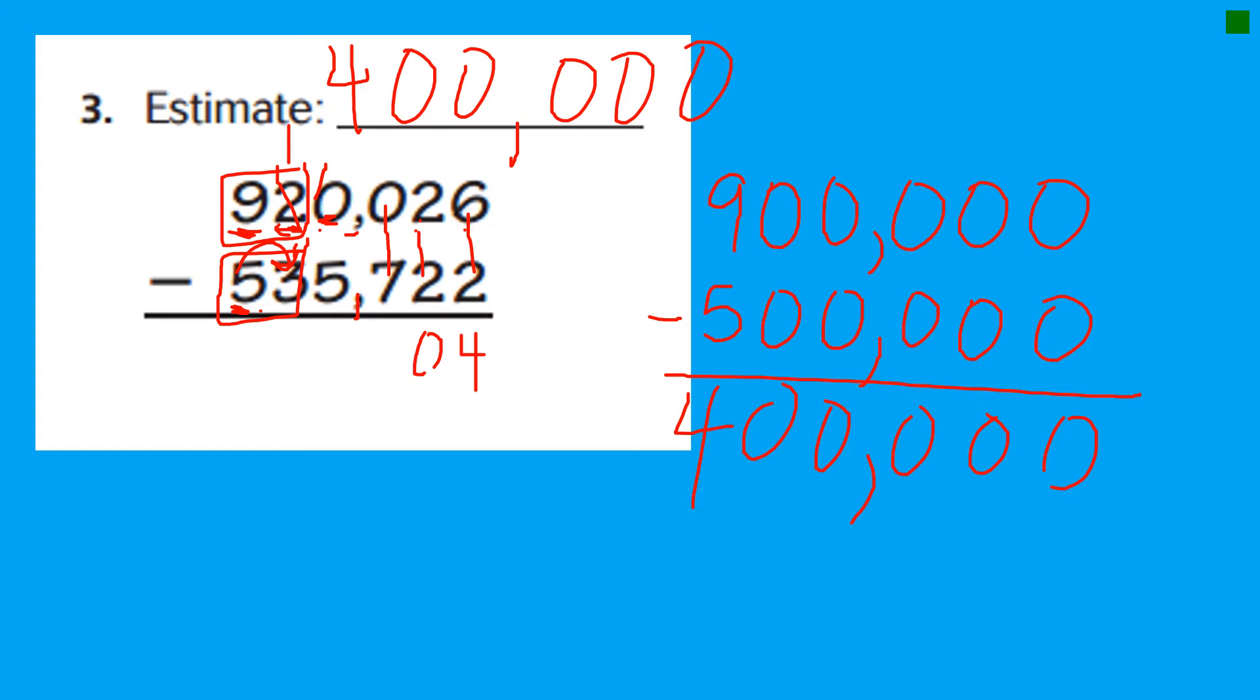But that doesn't really help us here yet, does it? It doesn't help us subtract 0 minus 7. So guess what? Farewell, 10. I'm taking one of you. And instead of 0 hundreds, now we have 10 hundreds. Because I took one of those thousands.